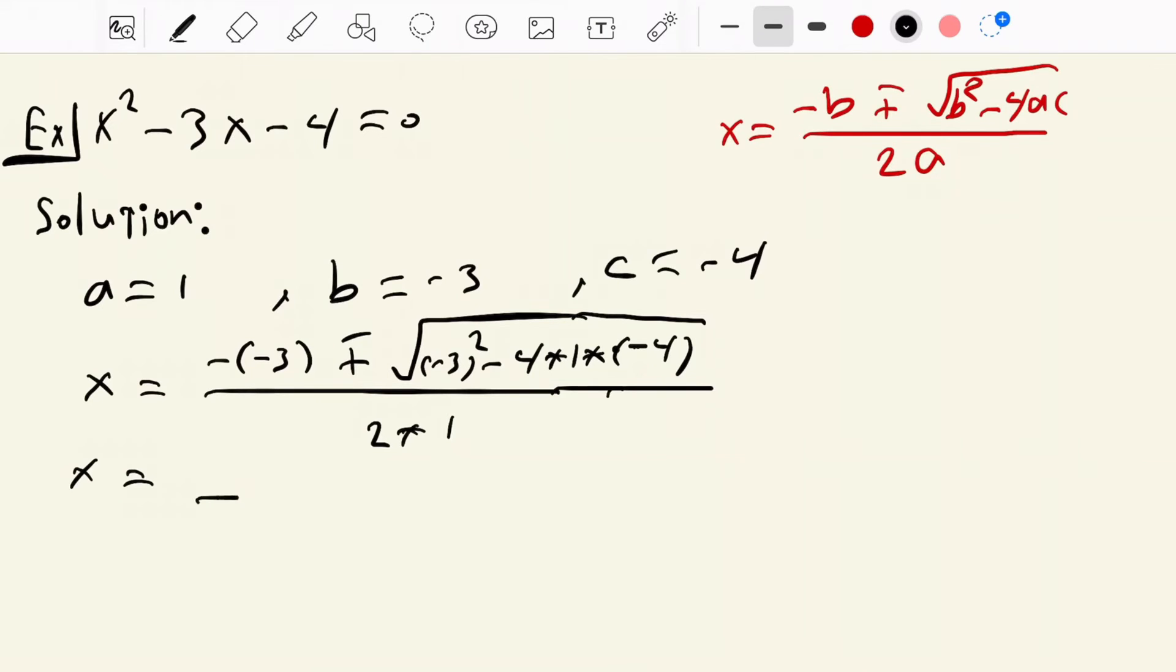So x is equal to 3 plus minus, minus 3 squared becomes 9, minus 4 times minus 4 becomes 16, plus 16, over 2.